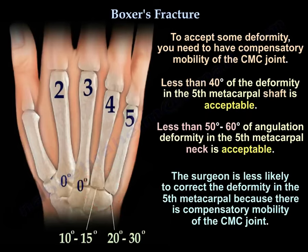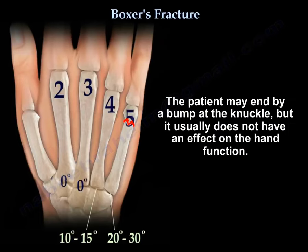Less than 40 degrees of deformity in the 5th metacarpal shaft is acceptable, and less than 50 to 60 degrees of angulation deformity in the 5th metacarpal neck is acceptable. The surgeon is less likely to correct the deformity in the 5th metacarpal because of compensatory mobility of the CMC joint. The patient may end up with a bump at the knuckle, but it usually doesn't affect hand function.